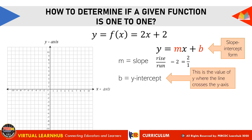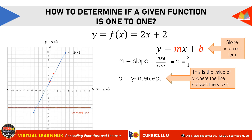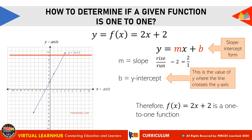The y-intercept is the value of y where the line crosses the y-axis. When plotting a line in slope-intercept form, we plot the y-intercept first — at the y-axis, find 2. Then we use the slope: rise 2 units upward and 1 unit to the right, since both values are positive. Here is the line y equals 2x plus 2. We will now test this graph using a horizontal line, moving it along the y-axis. Since the horizontal line intersects the line y equals 2x plus 2 only once at any given time, the function 2x plus 2 is a one-to-one function.